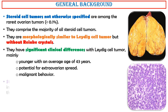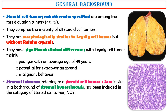Malignant behavior is a notable feature. Stromal luteoma, referring to a steroid cell tumor less than 2 cm in size in a background of stromal hyperthecosis, has been included in the category of steroid cell tumor not otherwise specified.